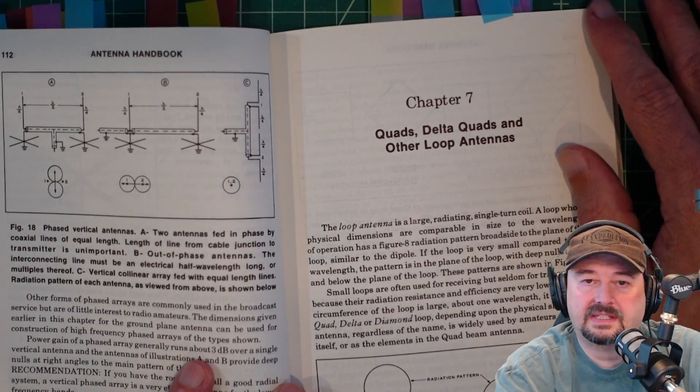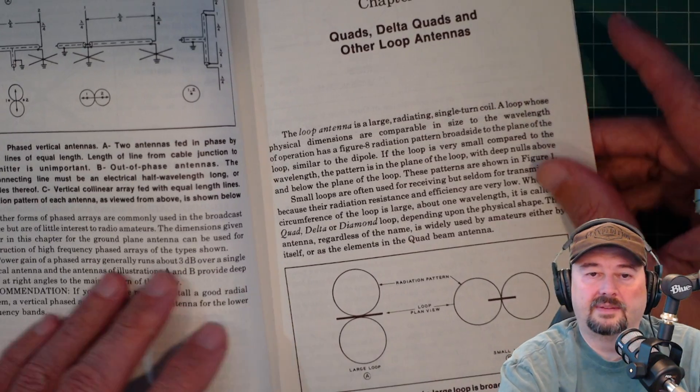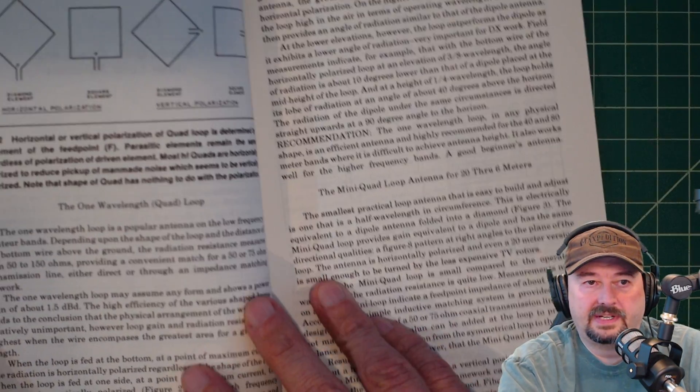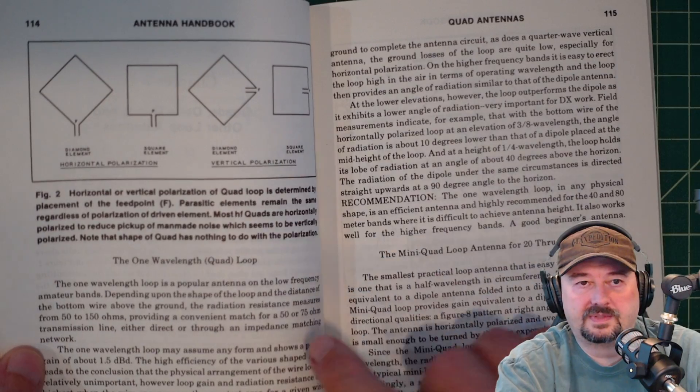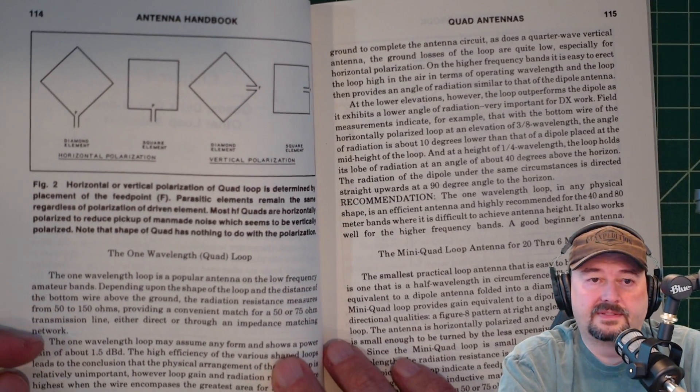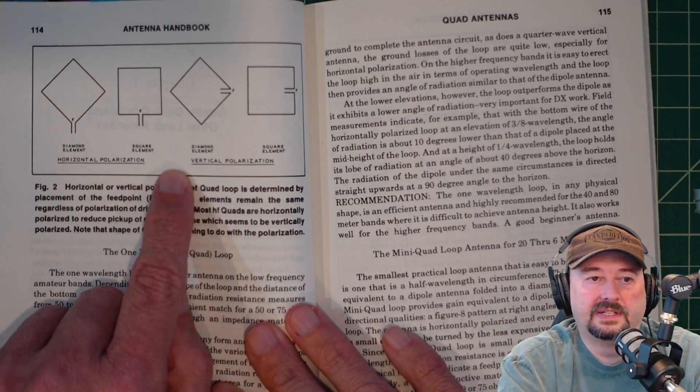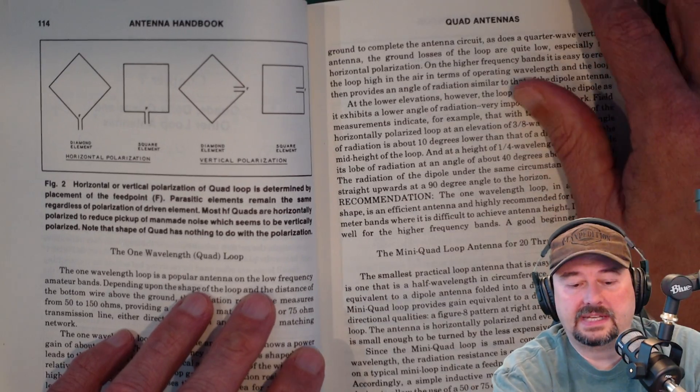Chapter 7 is quads, delta quads, and other loop antennas. And we did a show on Coffee and Ham Radios where we talked a little bit about loops on the ground antennas. So, it was nice reading through this beforehand and then just getting some ideas for that conversation. But he talks a little bit about horizontal and vertical polarization and how to understand that.